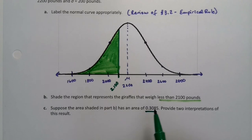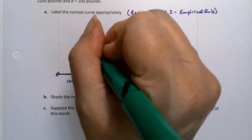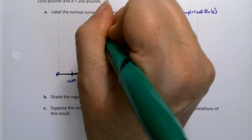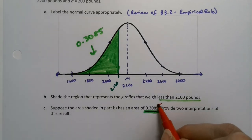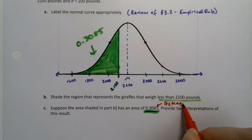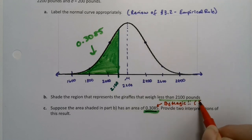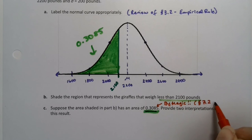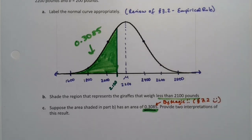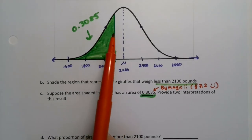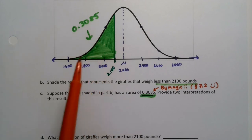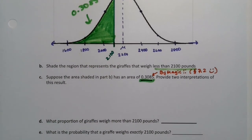Now suppose that area is 0.3085. We just magically know it's 0.3085 — that was given to us, so for the time being this is by magic. If you're thinking, how am I going to find that number? That's what section 7.2 will teach us. For right now you don't know where it comes from, but we'll learn how to do it in 7.2. It will involve a calculator because finding a curved area like that requires calculus, and we're not going to require calculus — we'll use StatCrunch or our calculator, which both have it programmed in.